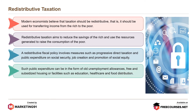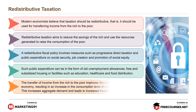Such public expenditure can be in the form of unemployment allowances, free and subsidized housing, and facilities such as education, health care and food redistribution. The transfer of income from the rich to the poor improves income distribution in the economy, resulting in an increase in the consumption level of a larger number of people. This increases aggregate demand and leads to increased investment and employment.